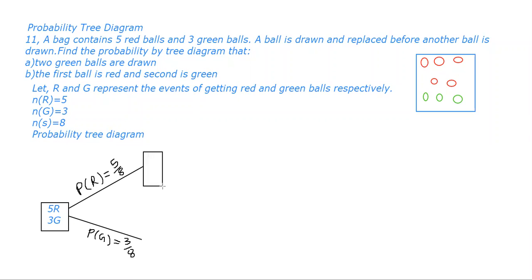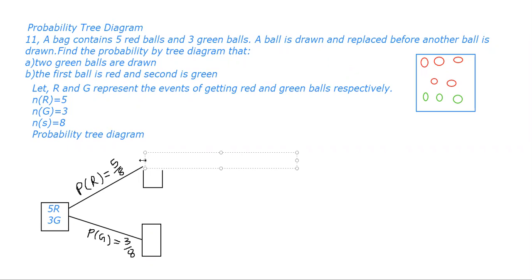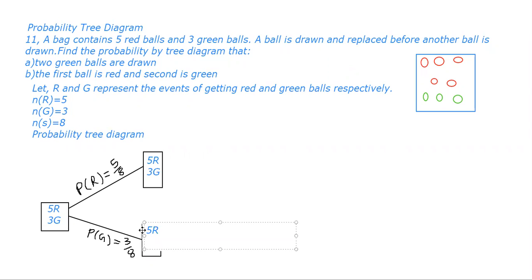Now again, since a ball is drawn and replaced before another ball is drawn — one ball was taken first, then replaced — the number will not be changed. So the same five red and three green are left. Similarly, if the first one was green and it is replaced, there won't be any changes, and again another ball is drawn.